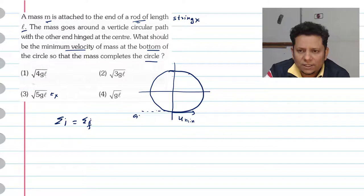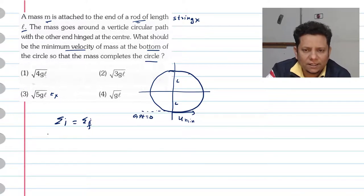Let's say at this area we have GPE equal to 0. This is your length L. So here we can write the initial energy. The potential energy is 0, kinetic energy is half M U square.